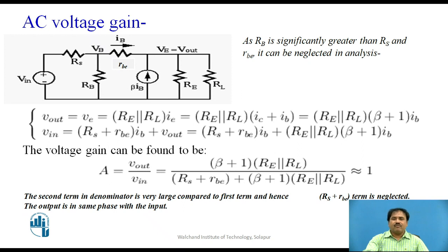Thereby, the value of this voltage gain A is always close to 1, but always less than 1. This is one of the main properties of the emitter-follower — it has a very low voltage gain. In fact, it is just equal to 1 in most cases, but normally it is less than 1.